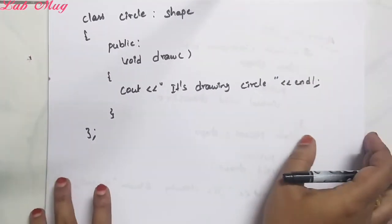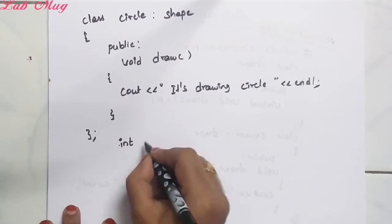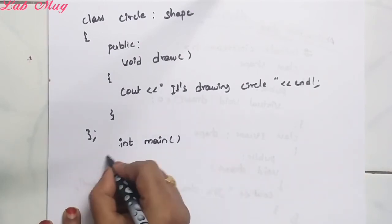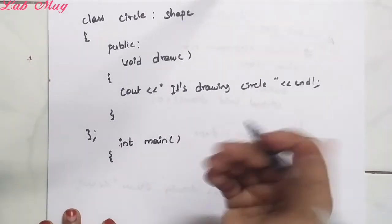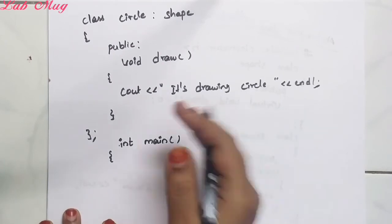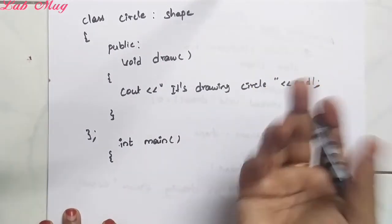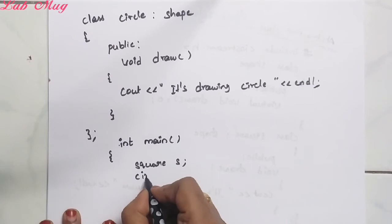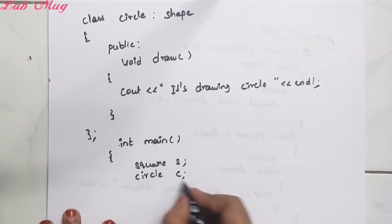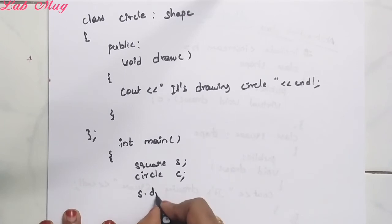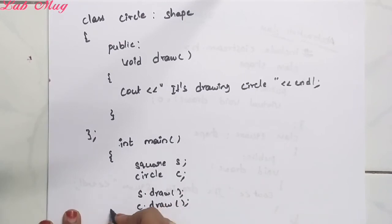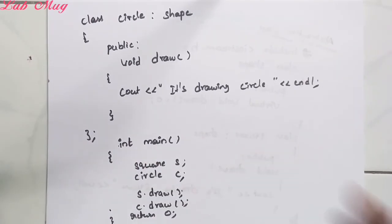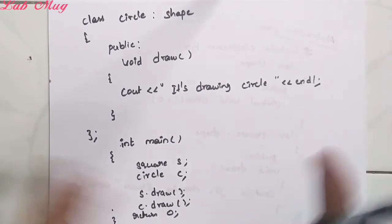Next ipadhi three classes define chesanu. Now main method loki vellam. Main method lo ippudu derived classes ki manam object create chesanu - derived classes ki object create chesi tharvata dhantlo access chesanu. Base class ki object create cheyyadam ledu. Square ki object create chesanu.